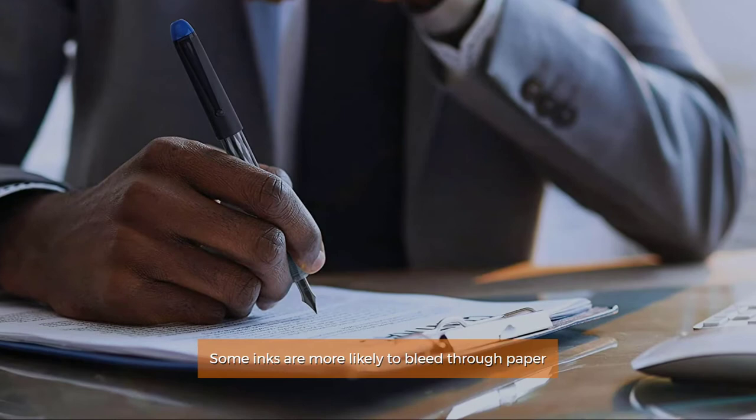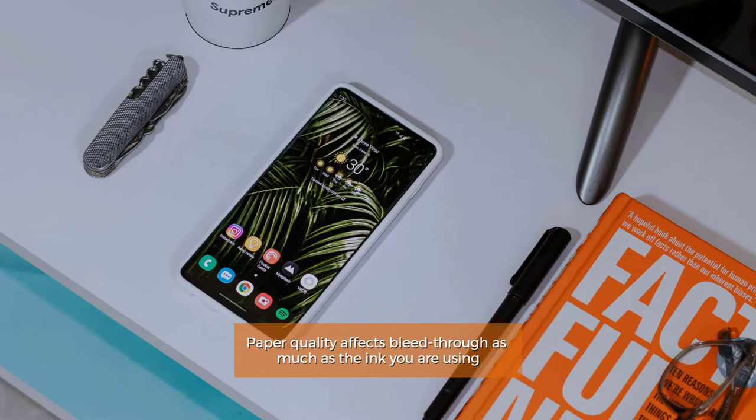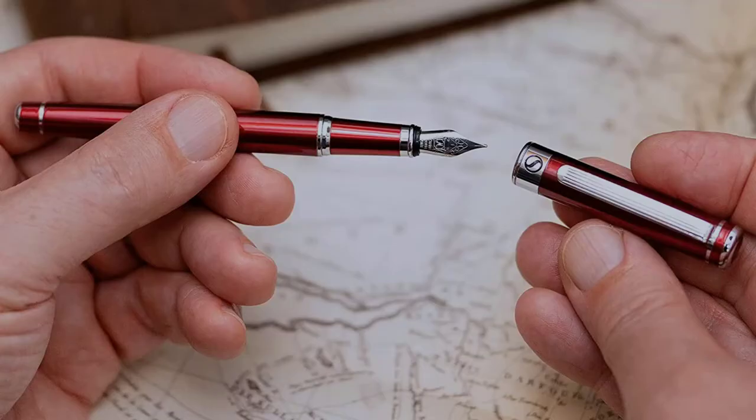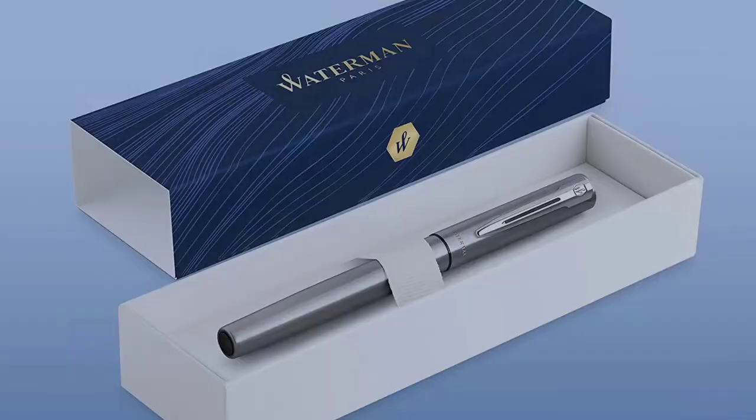Number 2: Bleeding through paper. Some inks are more likely to bleed through paper. Paper quality affects bleed through as much as the ink you are using. Thinner paper absorbs ink more than thicker paper. Water-based inks used in fountain pens can fade over time or are less likely to adhere to other types of surfaces.